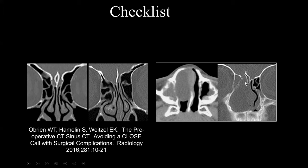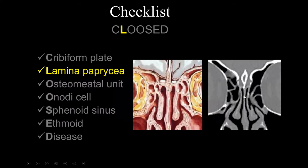The checklist also forces you to look for any defects in the anterior skull base. For instance, if you saw a mass involving the right nasal cavity, you might think it's polypoid mucosal thickening because there's adjacent disease. But by looking at the anterior skull base, you can identify a defect — in this case, an encephalocele extending through the anterior skull base into the nasal cavity. You certainly do not want to send your surgeons in to resect an encephalocele.